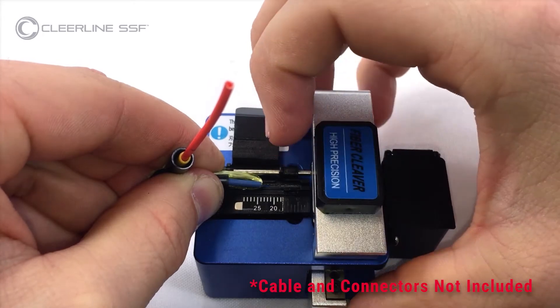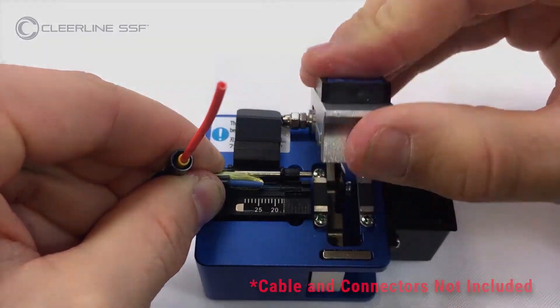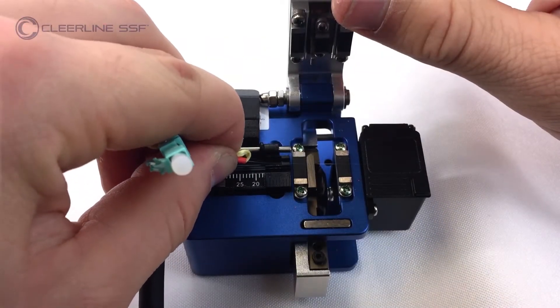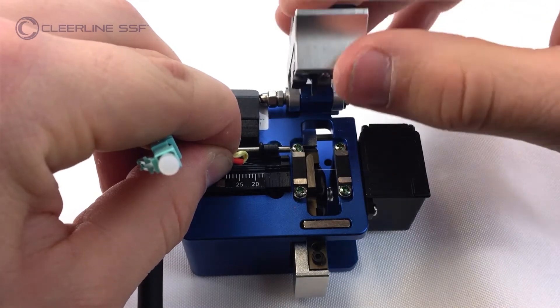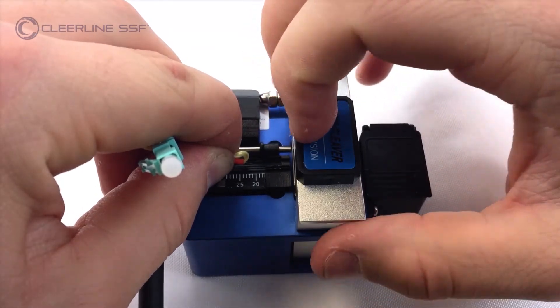This cleaver is factory adjusted to cleave Clearline SSF's stronger, safer, faster to terminate fibers. That means you're ready to cleave as soon as you open your kit.